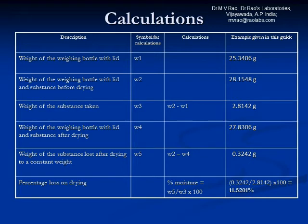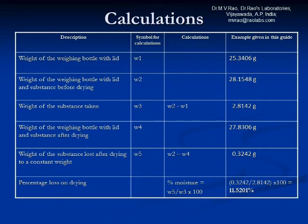The weight loss on drying, W5, which equals W2 minus W4, is 0.3242 grams. The percentage of loss on drying equals W5 divided by W3 multiplied by 100 — that is 0.3242 divided by 2.8142 multiplied by 100 — which comes to 11.5201 percent.